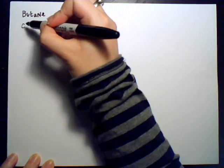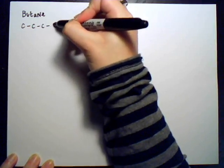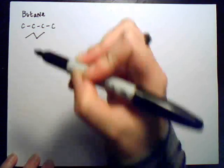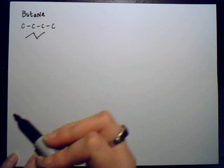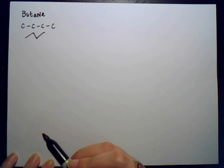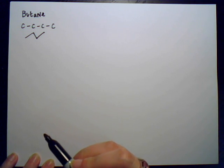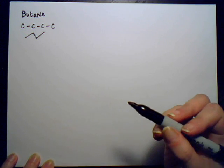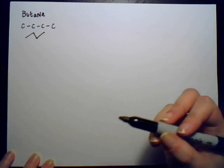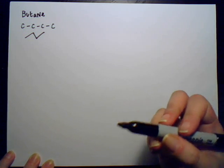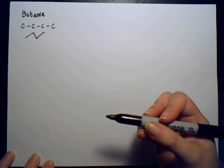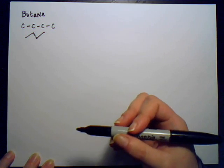I'm just going to draw it for you right here. So that's what we know as butane. And when we think about it, we imagine the four carbons in a straight line. But obviously if we were to look at an actual molecule, that is not how it would be arranged. So how would this molecule look if we were to actually examine the arrangement of the carbons?